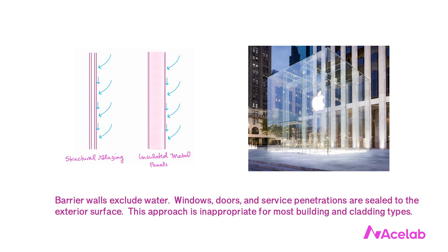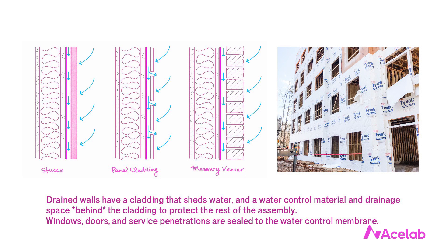The drainage and WRB approach is how most framed walls manage water. These walls have a cladding that sheds water, an air space behind it for drainage and drying, and a water control membrane behind that to protect the rest of the assembly. WRB stands for water resistive barrier. This strategy allows us to build lightweight framed walls out of moisture-sensitive materials — wood framing, wood sheathing, cellulose insulation, paper-faced drywall — as long as we protect them with a watershed cladding, drainage space, and WRB, all working together as a system.